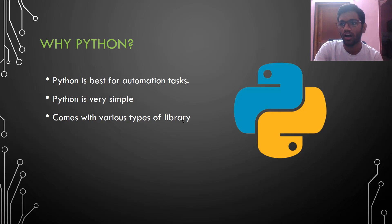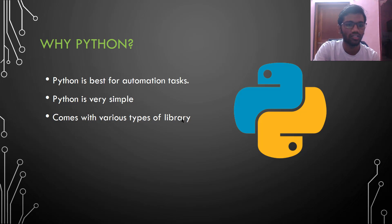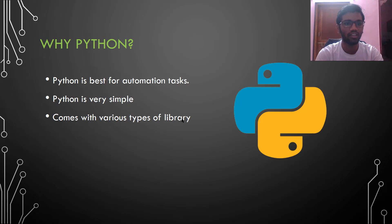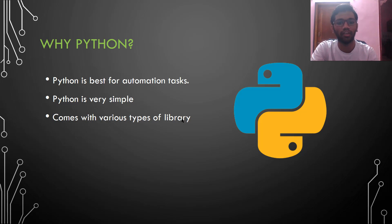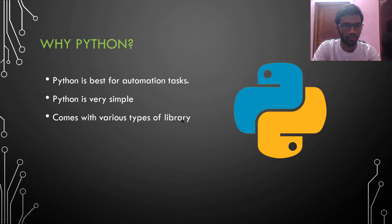Why are we using Python? Python is used in artificial intelligence because it is very easy to automate tasks in Python. Also, Python is very simple to code — it is a piece of cake; even a person who has just entered the programming field can code in Python. Python also comes with various types of libraries. If you want to make a website, you have Django. If you want to use cryptography, you have cryptography libraries. If you want to make a networking application, you have socket and Scapy-like tools. It basically comes with a variety of libraries.